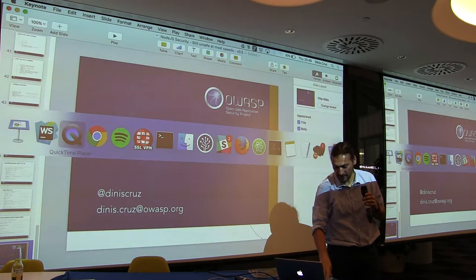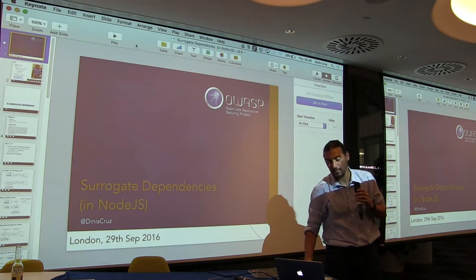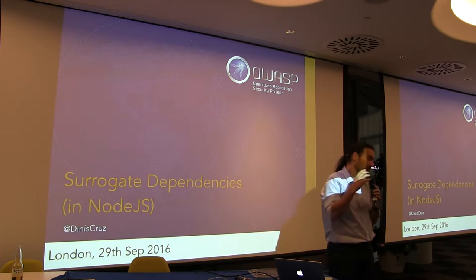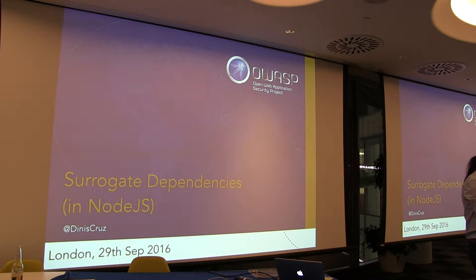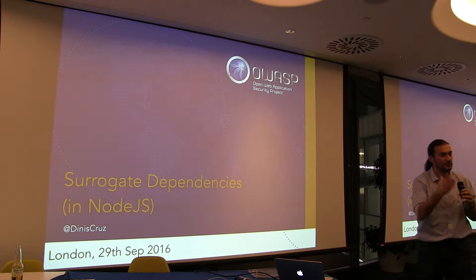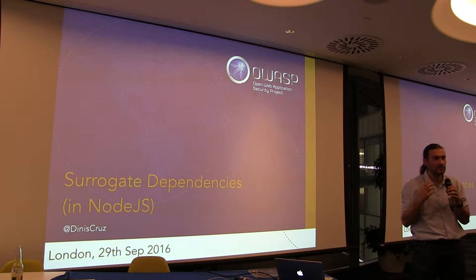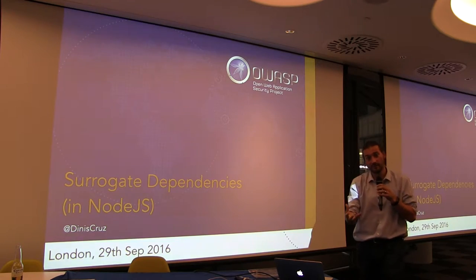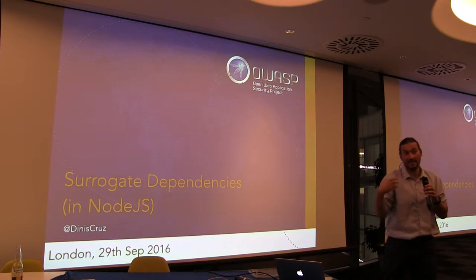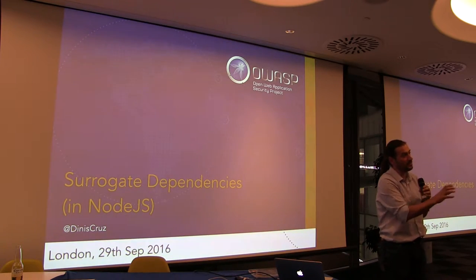The big problem I always had — and I remember this when I created the O2 Platform — was: how do you automate security knowledge and workflows? If you have security, you can find problems. The biggest problem is how do you communicate, how do you transmit? That's why I arrived at the idea of writing scripts, which is why O2 Platform exists. Then I realized that doesn't scale — I need tests. So that's why tests are so critical for me.